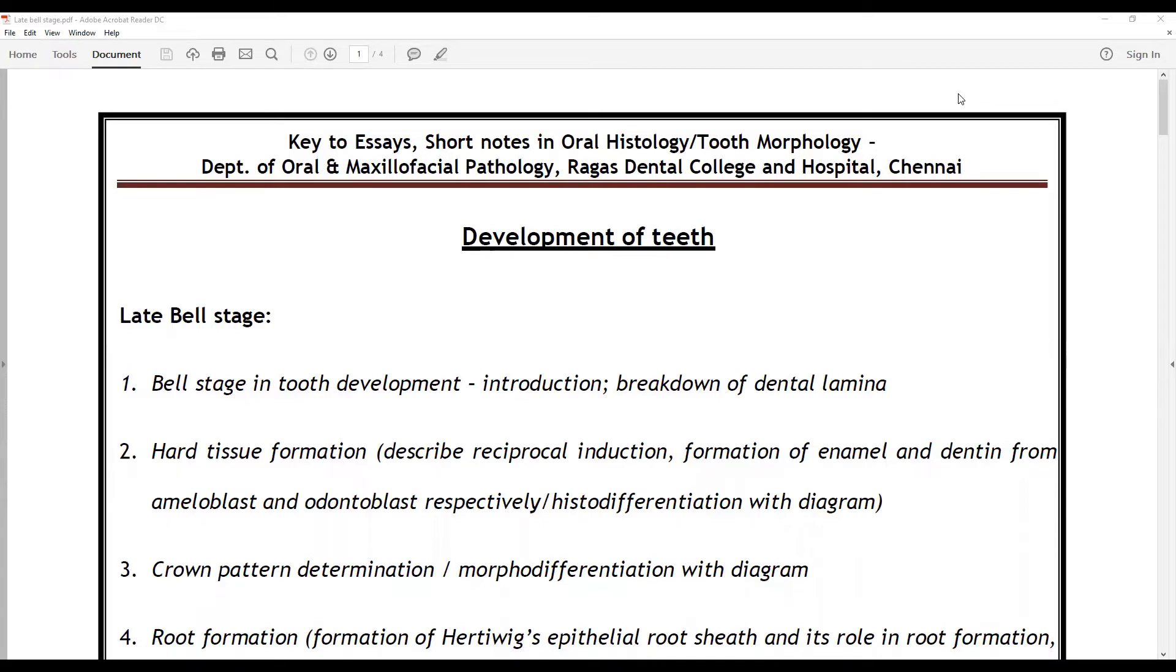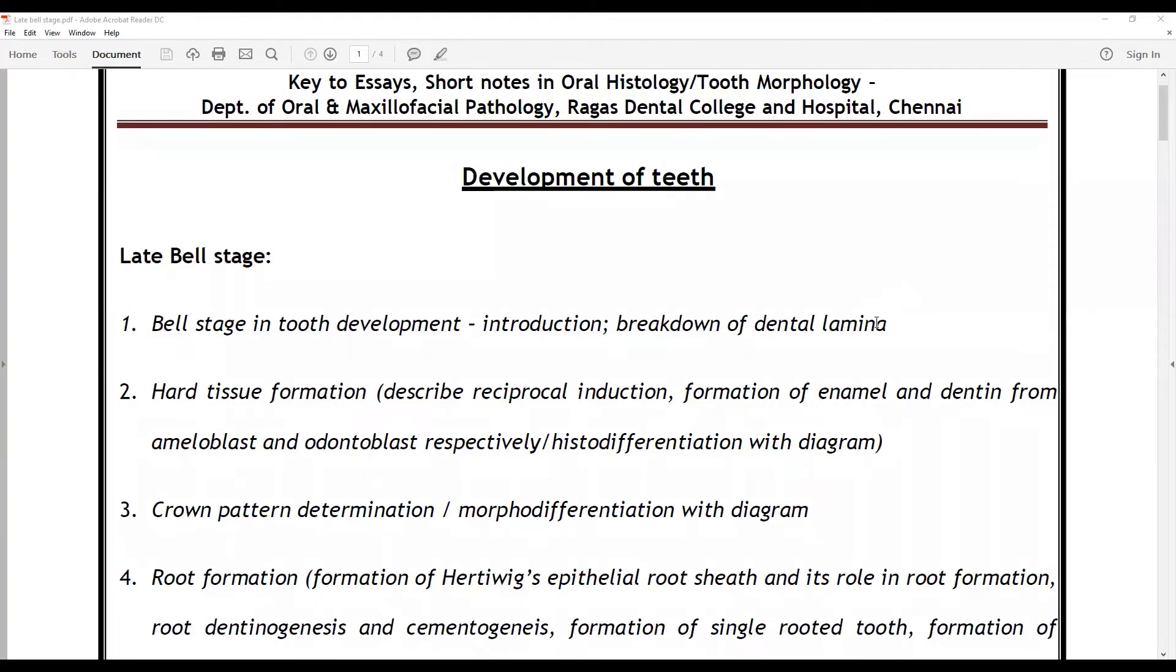For this, the key is the bell staging to development. Start with a brief introduction, start from the time of breakdown of dental lamina, talk about the hard tissue formation. Describe in detail about the reciprocal induction, formation of enamel and dentin from ameloblast and odontoblast respectively. Talk about histo-differentiation with the diagram, talk about crown pattern determination, morpho-differentiation with the diagram.